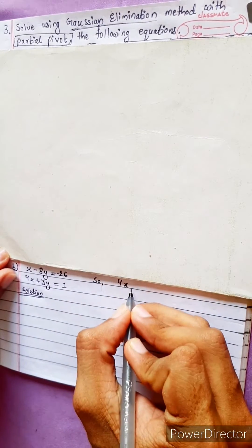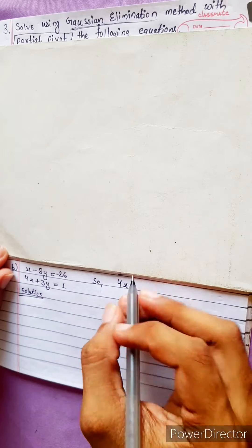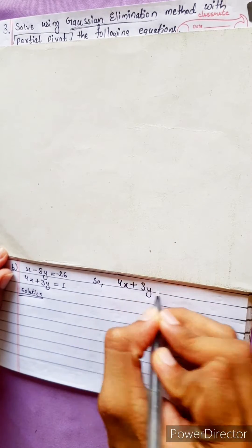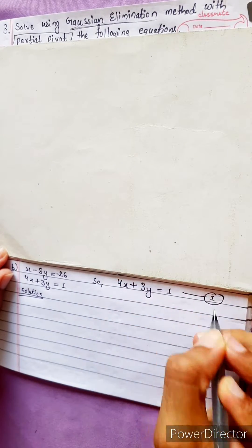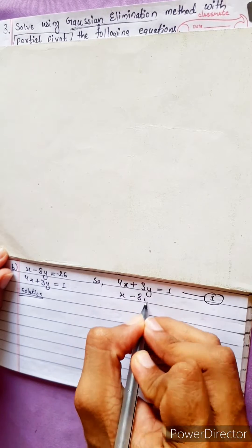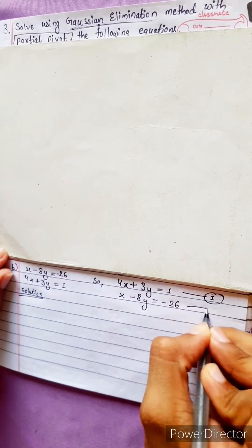So, 4x, is it visible? Okay. 4x plus 3y equals 1. This is our equation 1. And x minus 8y equals minus 26. This is equation 2.